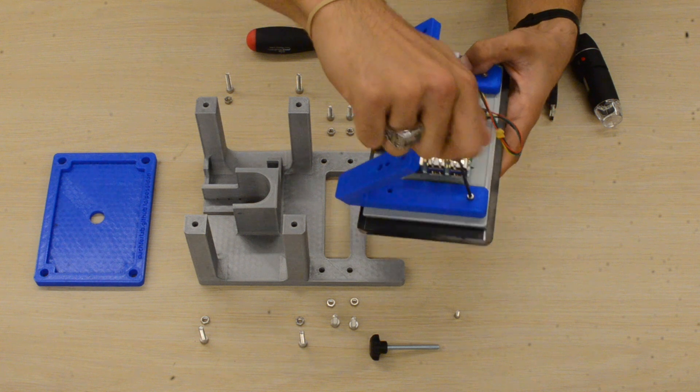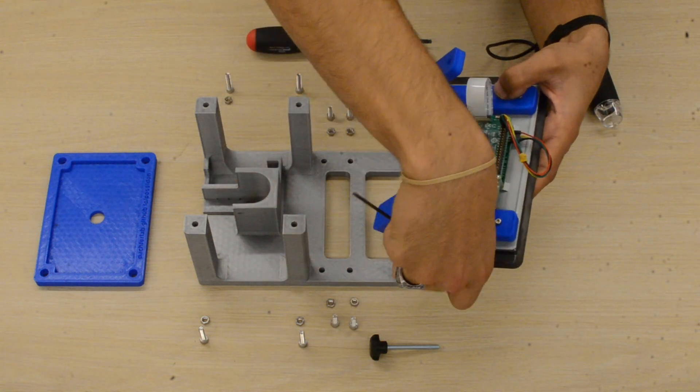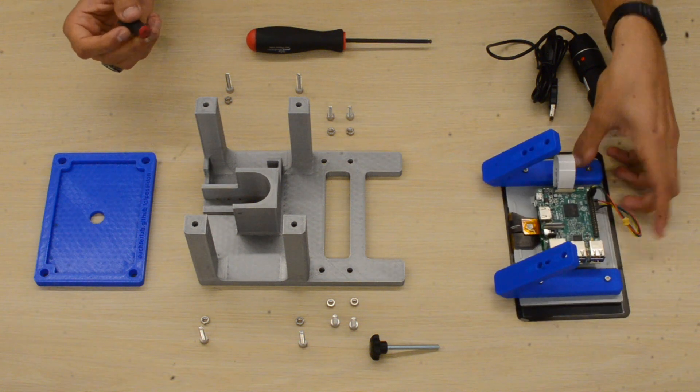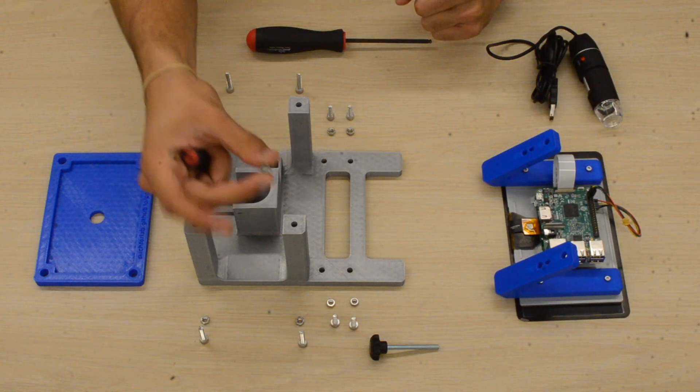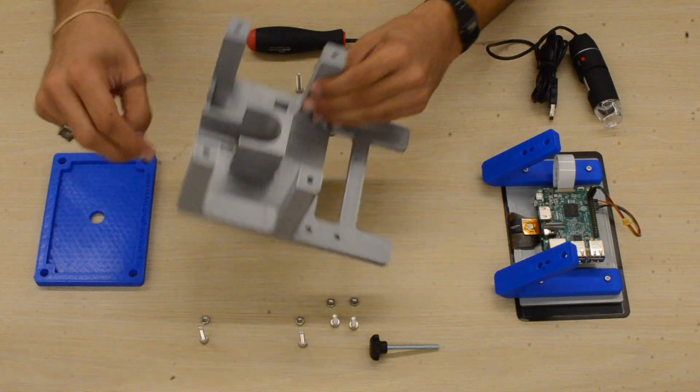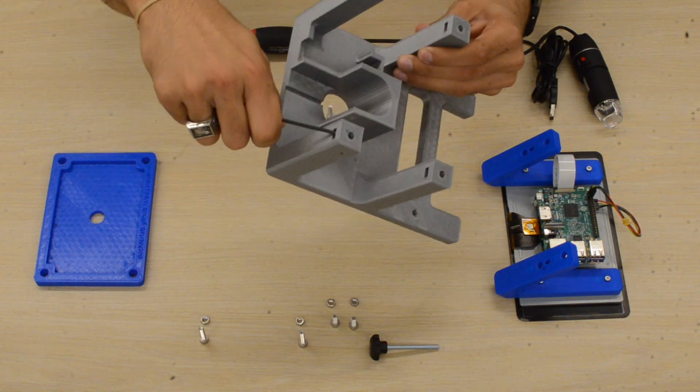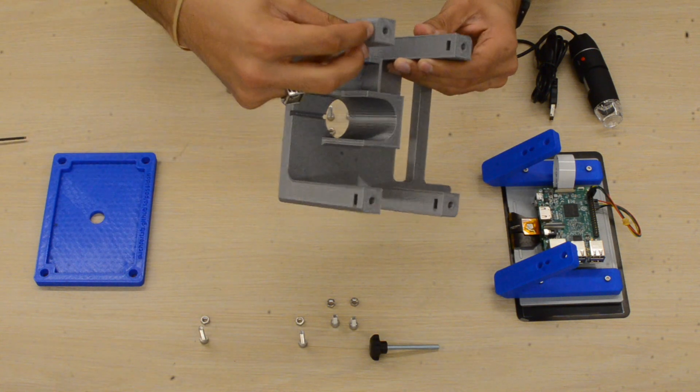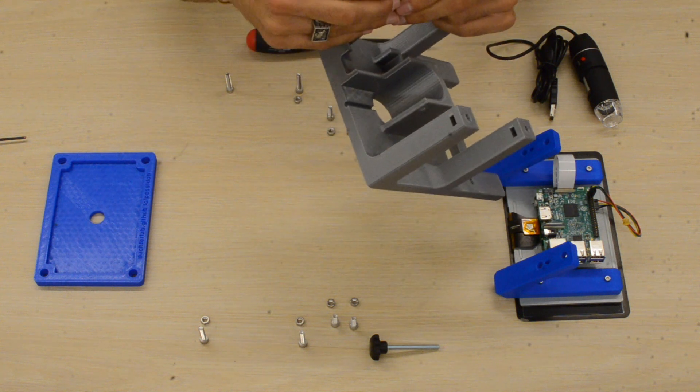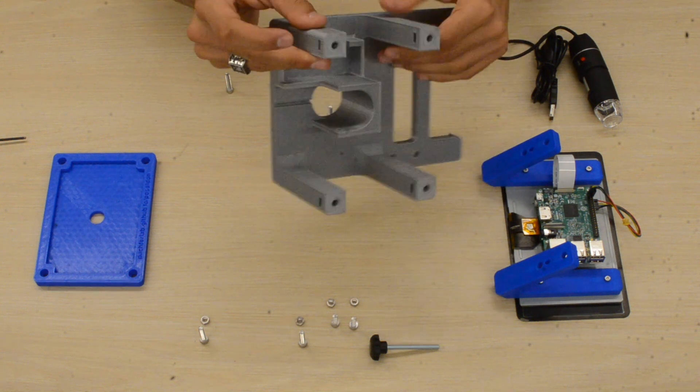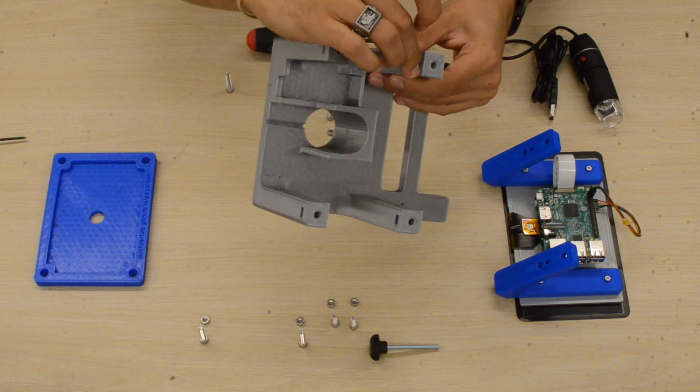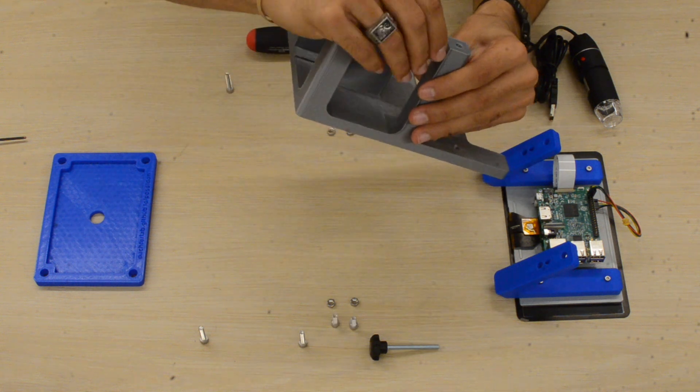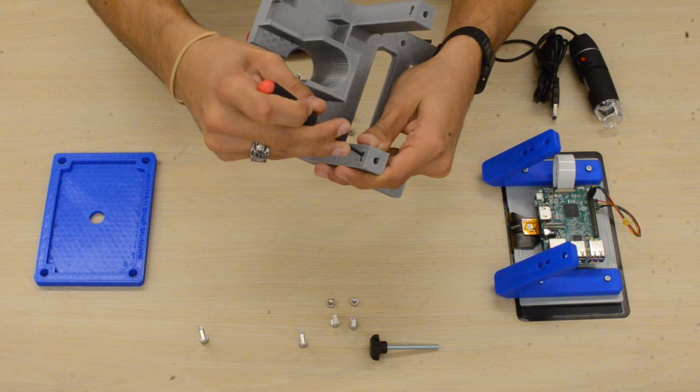Okay, once that's done, we'll set that aside and we'll go ahead and grab our M5 nuts, which we'll put in the microscope base. They'll go into these four holes that I'm pointing to right here, and you may need to fiddle around with the angle of the nut as you press it in there to get it in. You'll do that with all four of them.